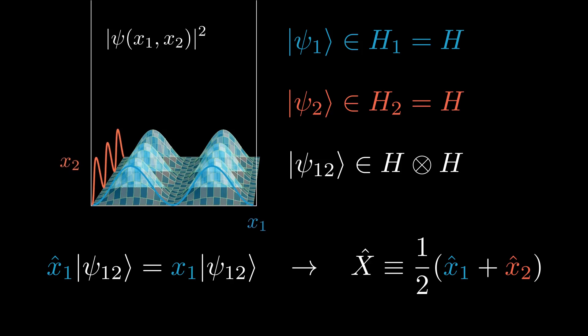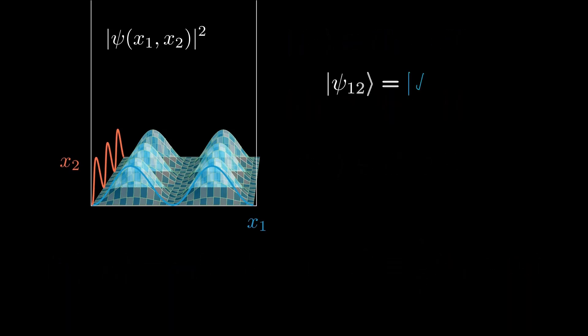This might seem extremely simple, but we have one catch. Because the two wave functions describe particles of the exact same type, we cannot tell the difference between particle 1 and 2 anymore inside the well. This means that our probability of finding particle 1 at position x should be equal to the probability of finding particle 2 at position x.